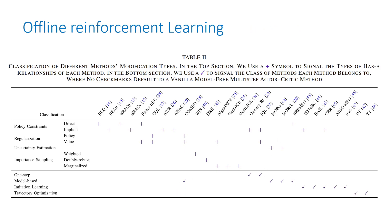Examples of model-based approaches include BREMEN, MOPO, MOREL, and COMBO — with COMBO being the better one. MOPO and MOREL use uncertainty estimation to avoid out-of-distribution issues, while COMBO uses regularization, which has proven more effective. They want to model the environment properly but still penalize actions that go too far from the behavioral distribution.